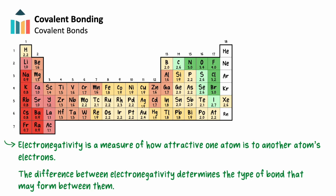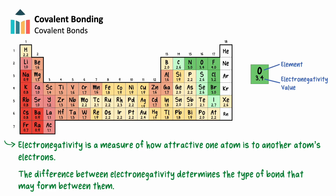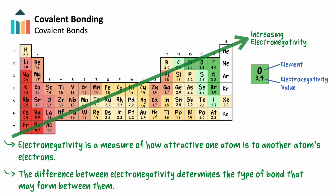Electronegativity is a measure of how attractive one atom is to another atom's electrons. We can map electronegativity on the periodic table, showing each element and its electronegativity value. In doing this, we find a trend where electronegativity increases as we go up and to the right. The difference between two atoms' electronegativity values will determine the type of bond that may form between them.